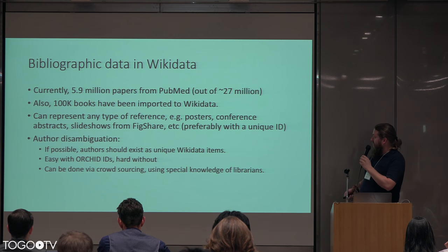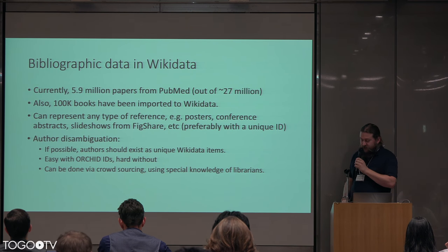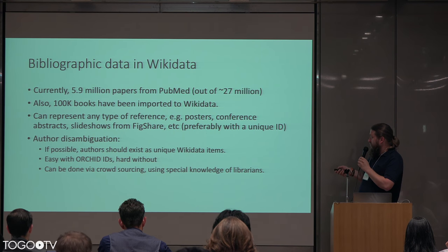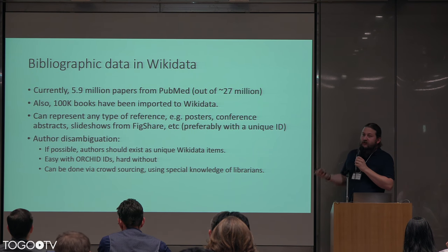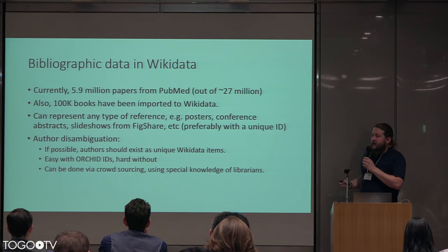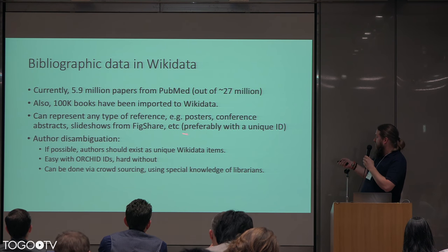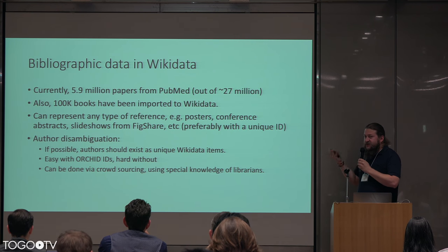Now, quickly about the bibliographic data in Wikidata. Currently there are almost 6 million papers from PubMed in there, out of the 27 million which have been published. About 100,000 books are there too. But you can represent any kind of item which can be referenced — this can be posters, conferences, abstracts, slideshows from Figshare. It does not need to have its own unique ID, because as soon as you create a Wikidata item, it automatically gets a unique ID. But certainly, in order to make it interoperable with other systems, it's highly advisable to have a unique ID like a DOI. Figshare gives you that as soon as you upload something.